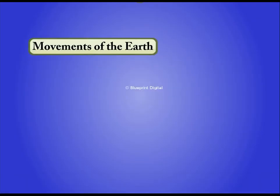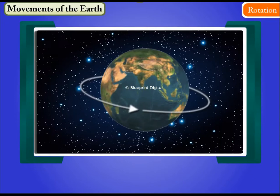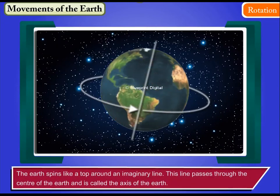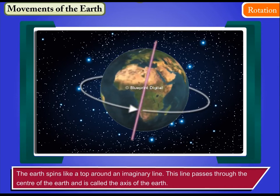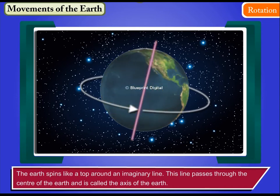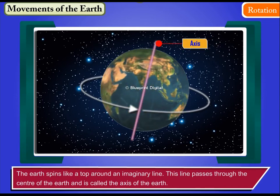Movements of the Earth: Rotation. The Earth spins like a top around an imaginary line. This line passes through the center of the Earth and is called the axis of the Earth.